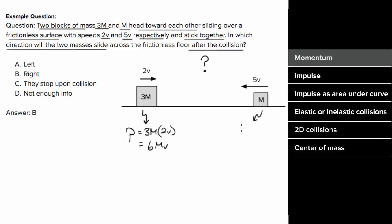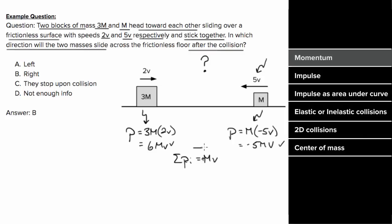The momentum of mass m is going to be m times the velocity, which is negative 5v. Momentum is a vector, so you can't forget the negative signs — that gives a momentum of negative 5mv. So the total initial momentum is 6mv plus negative 5mv, which is 1mv. That's positive, meaning the total momentum initially is to the right, and after the collision, the total momentum will also have to be to the right.